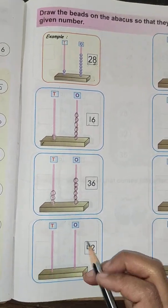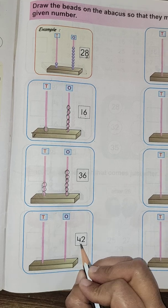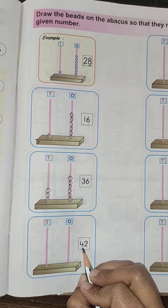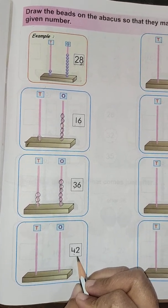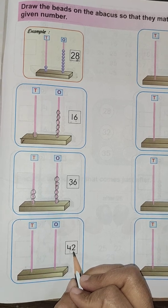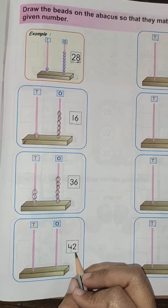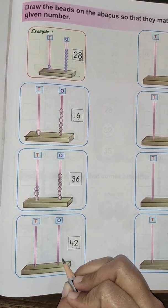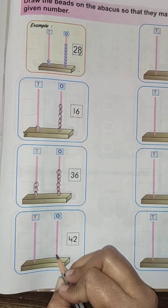Now see the next. The number is 42. Now you tell me, which number is in place of ones? Yes, the number is 2. So we draw 2 beads here: 1, 2.